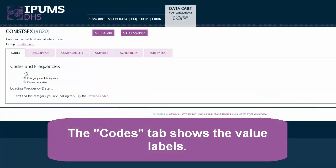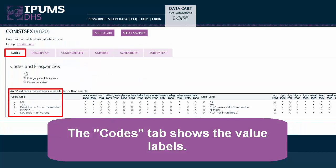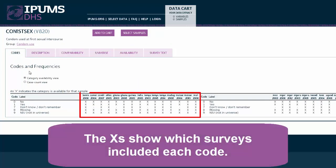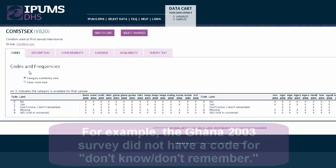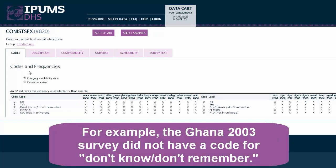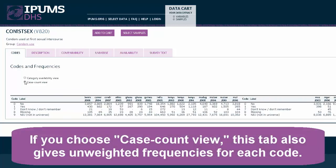The first tab, Codes, shows you the value labels. The Xs show which surveys included each code. For example, you can see that the Ghana 2003 survey did not have a code for don't know or don't remember. If you choose Case Count view, this tab also gives unweighted frequencies for each code.